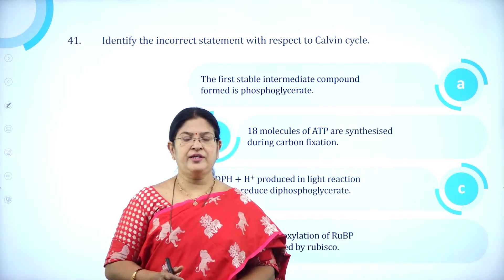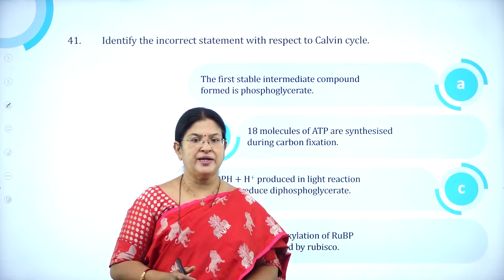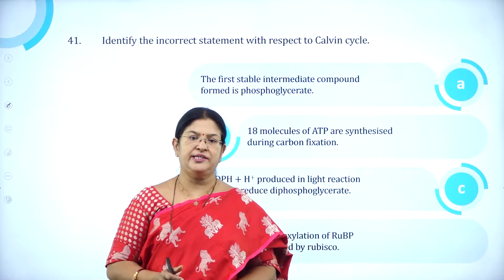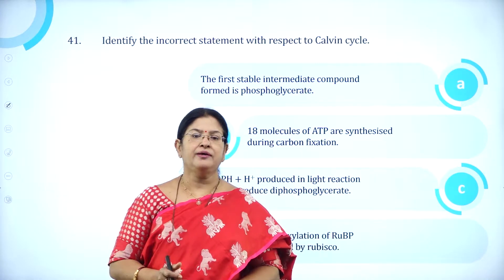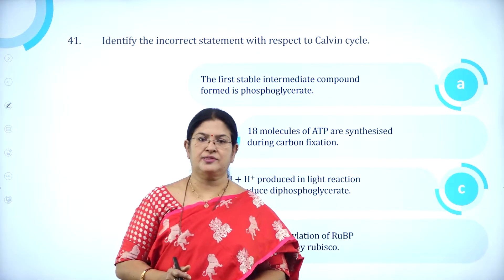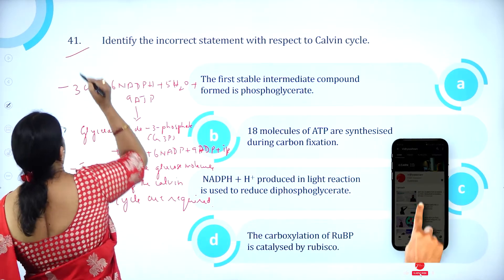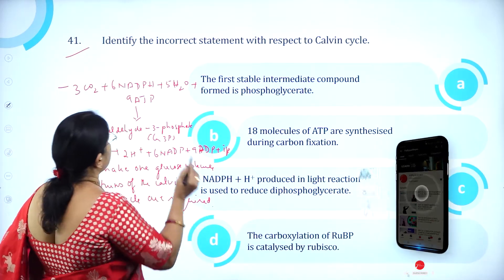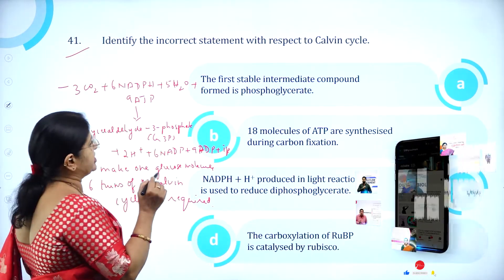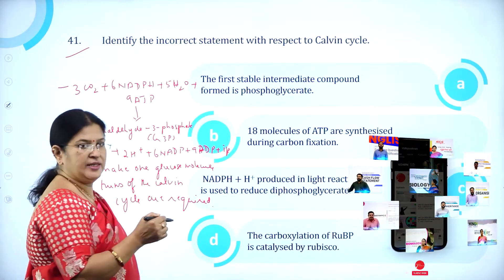Hello everyone, welcome back to part 3 of Karnataka CET 2009 biology paper analysis. Moving on to question number 41: Identify the incorrect statement with respect to Calvin cycle.